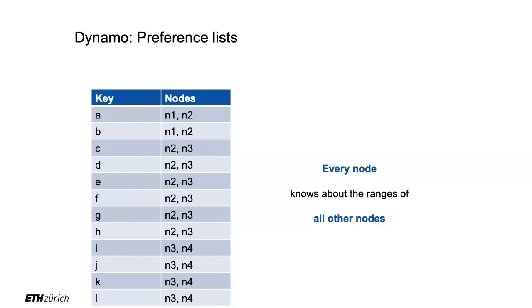How is the preference list shared? There is a bootstrapping problem — in order to store that data, we need to store that data. But there is a whole domain of distributed systems with protocols for this. There's what's called a gossip-like protocol where nodes randomly talk to each other and share information, and somehow it converges to knowing all of it. So every node knows about all intervals and which nodes are responsible for each one.